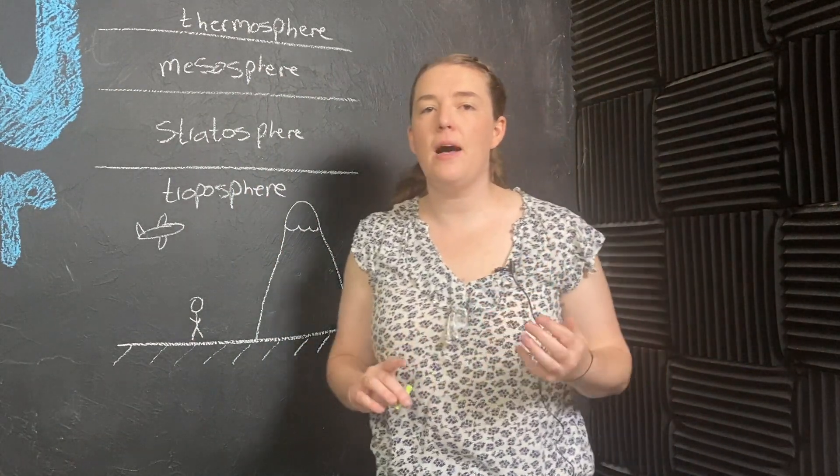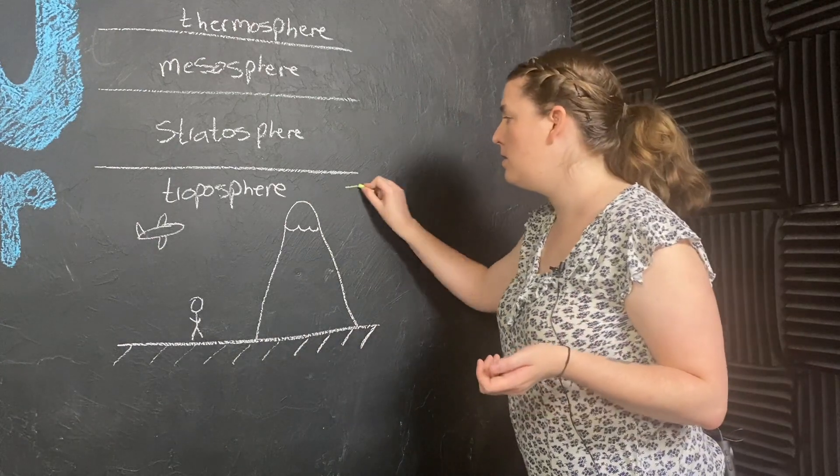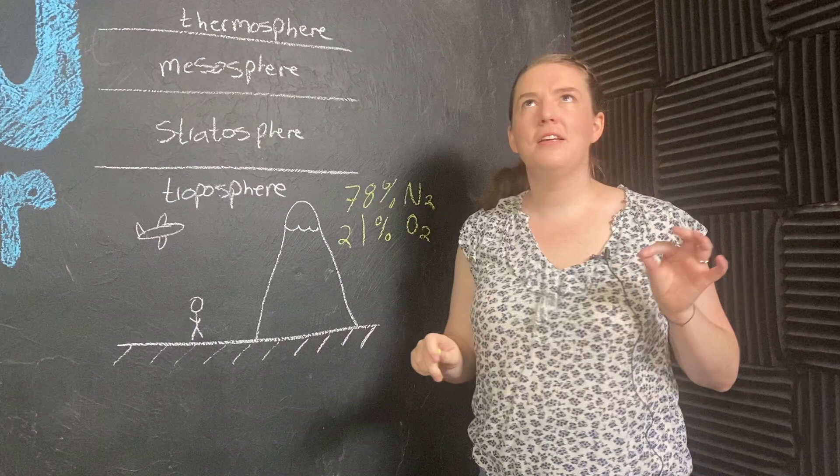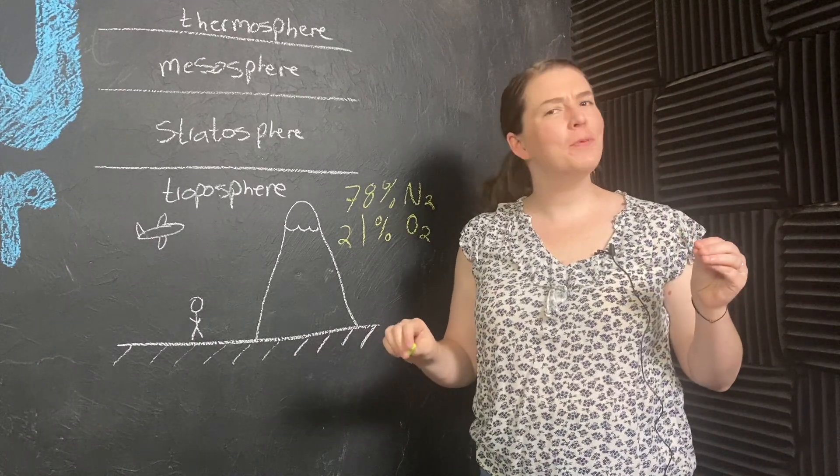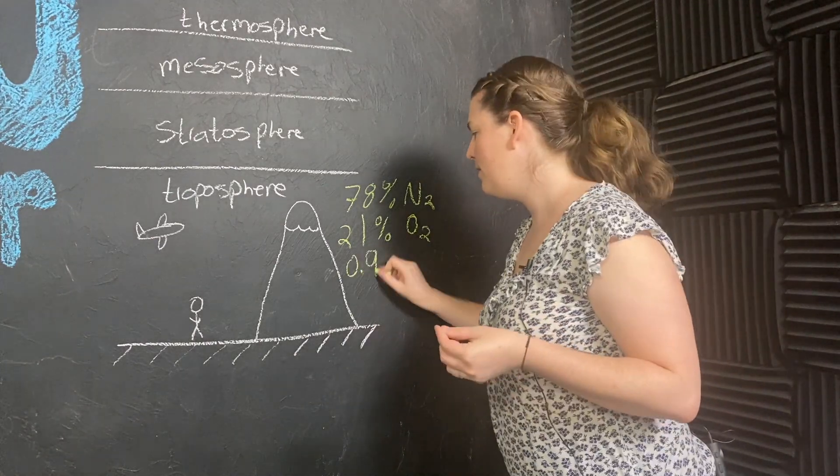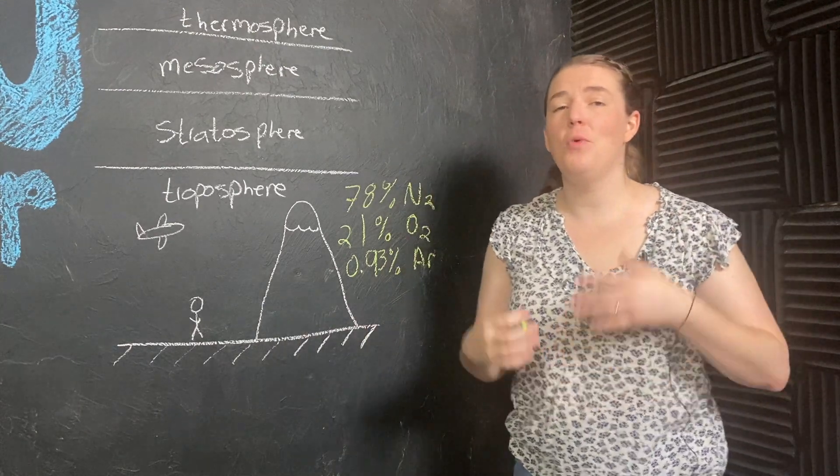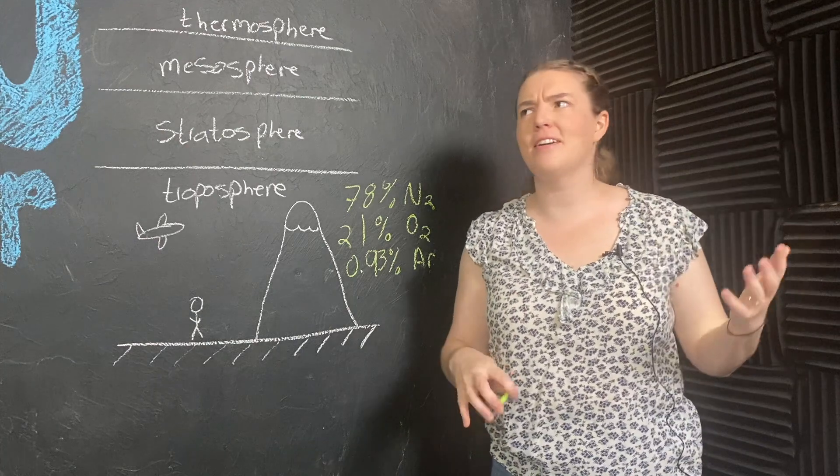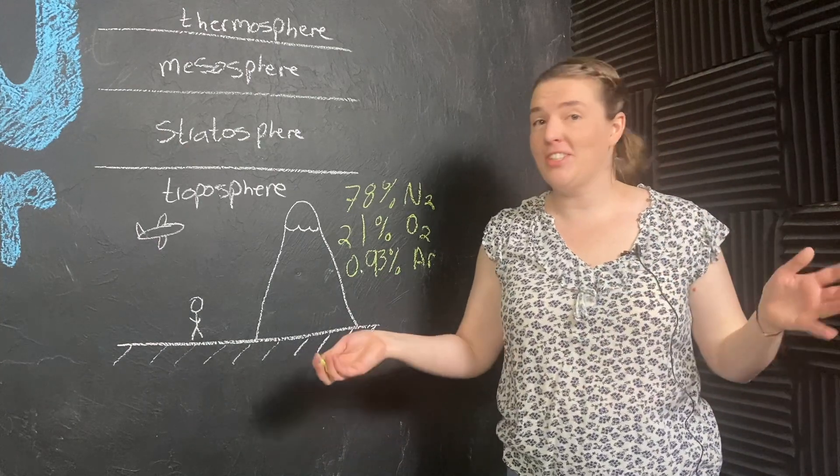Chemically, the atmosphere is made up of 78% nitrogen, 21% oxygen, like 0.93% argon, and then after that you've got water vapor, and carbon dioxide, and methane, and NOx, and all of the other trace gases.